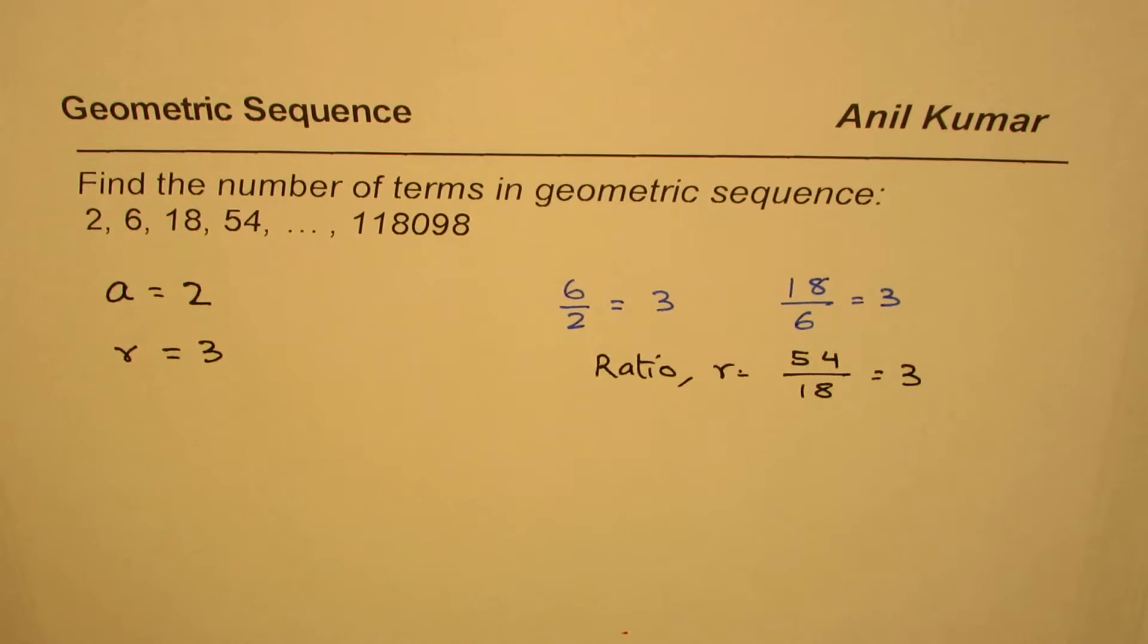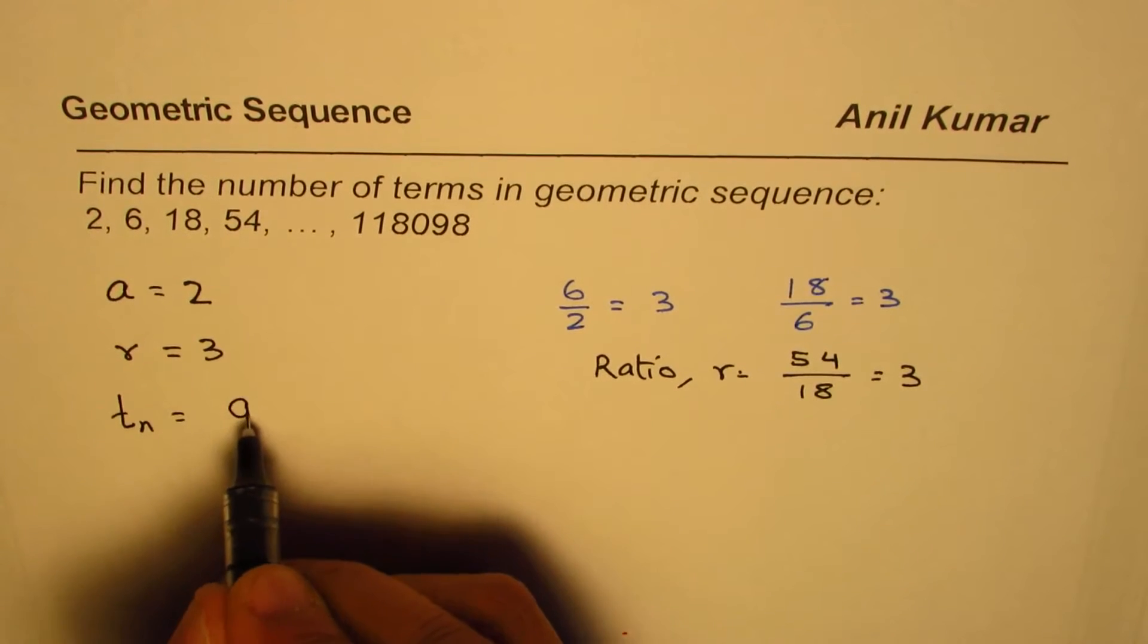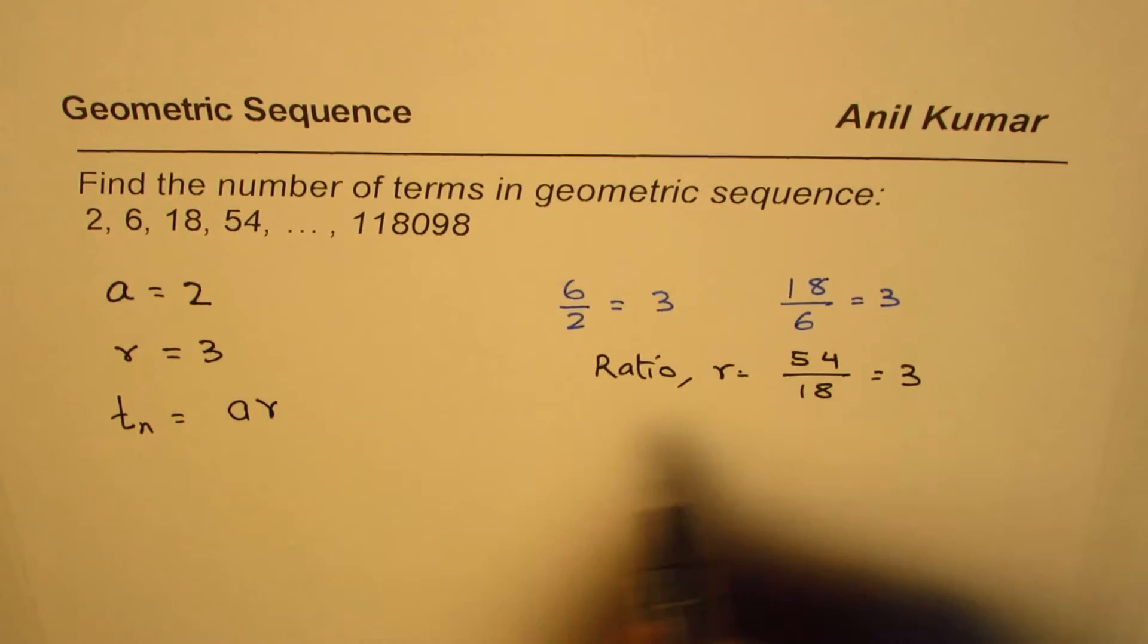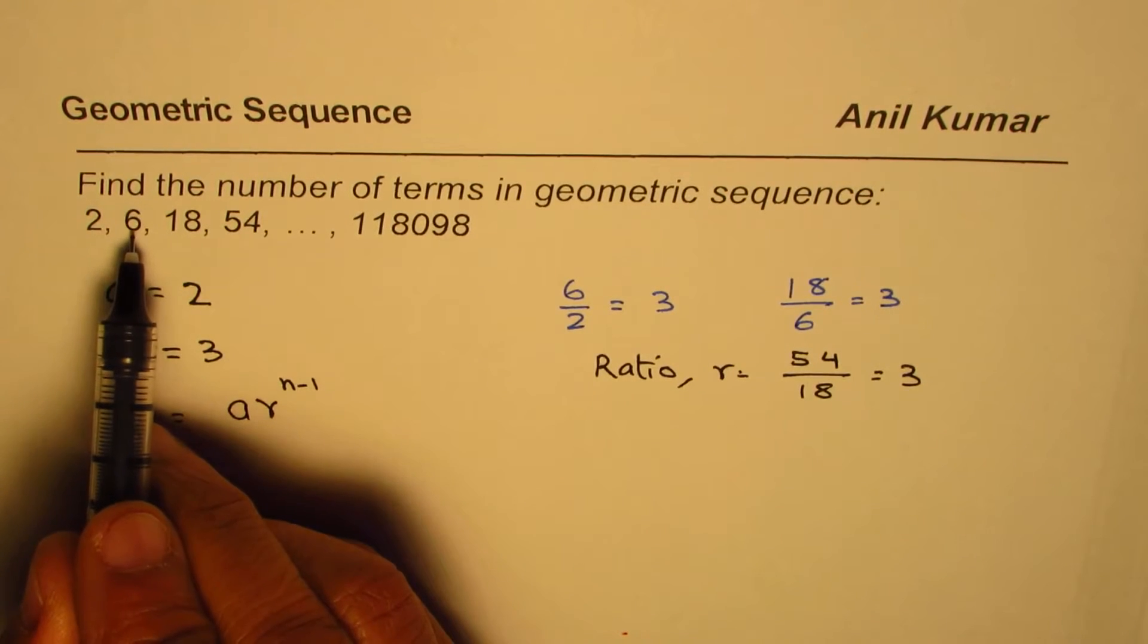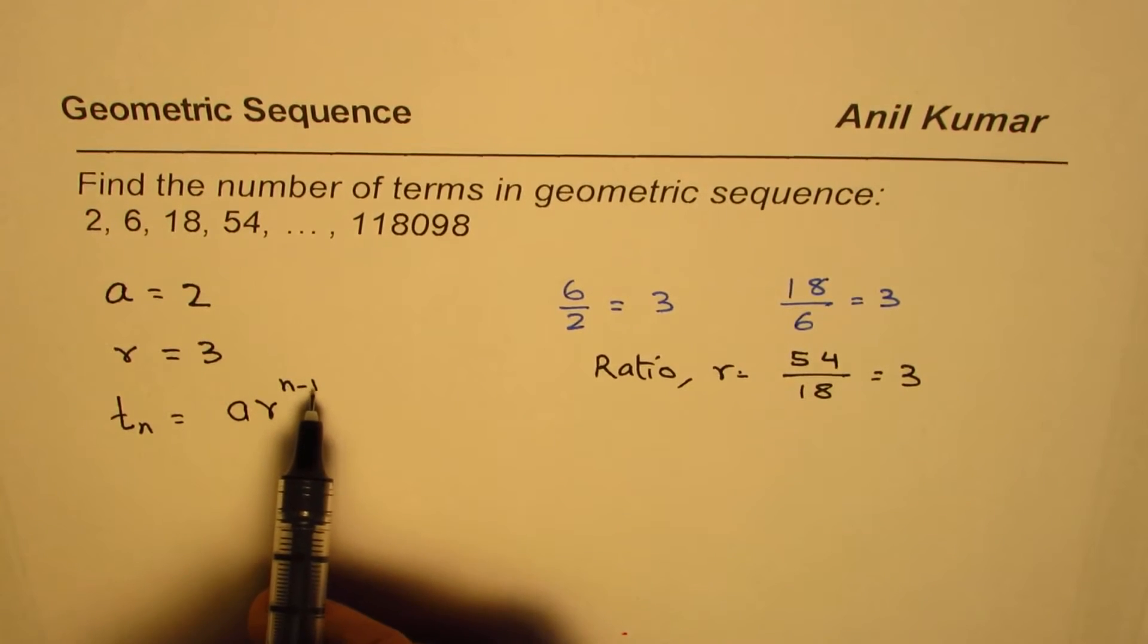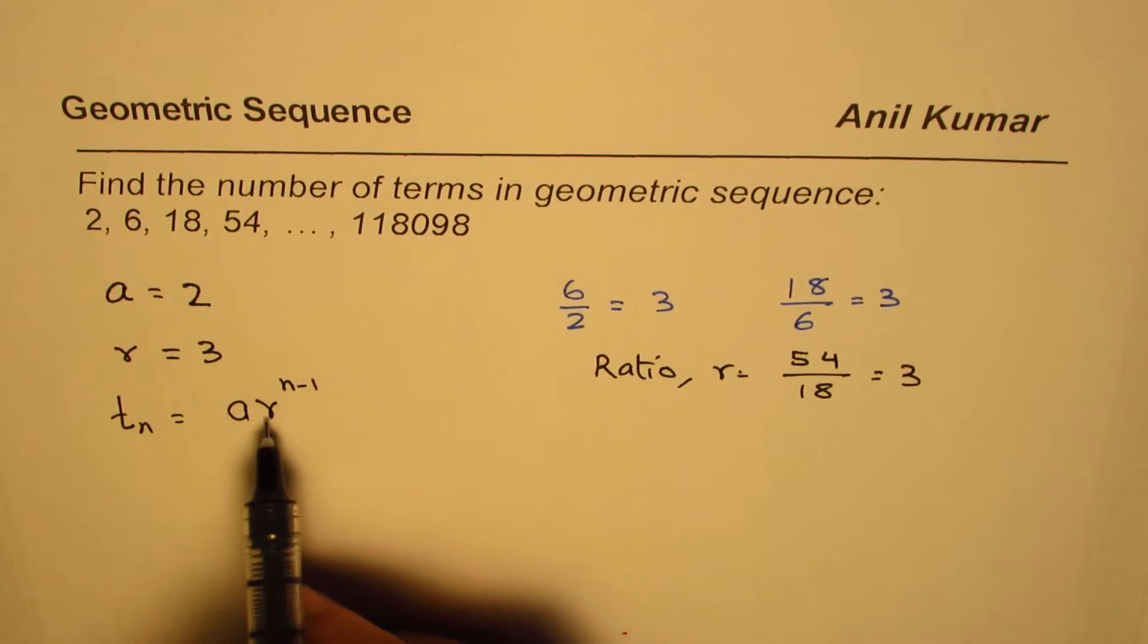So what is the general term? General term for such a series will be a and you are multiplying by r every term, so it is r to the power of n minus 1. The second term is multiplied once so that is n minus 1. The first term is not multiplied by r, it is as such, so this part is 1, that means r to the power 0.